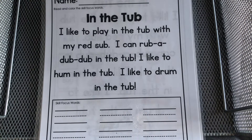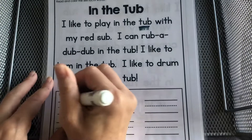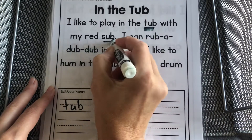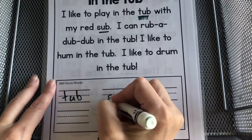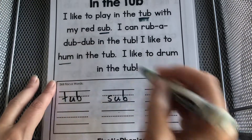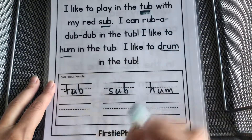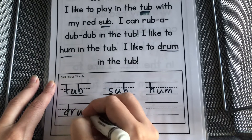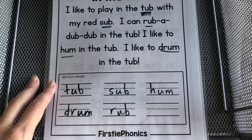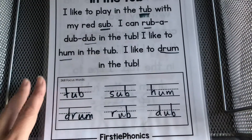Down here we're going to write our words. I'm going to underline them first as we go. Let's start with tub. Tub. Sub. Hum. Drum. Rub. Dub.